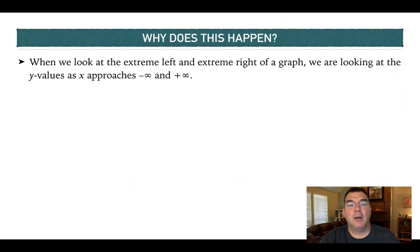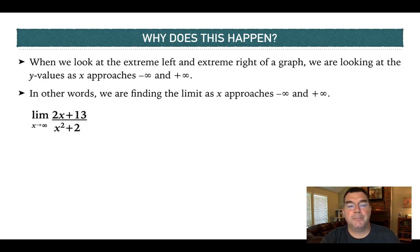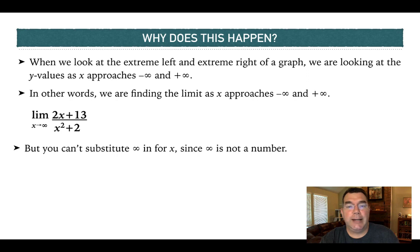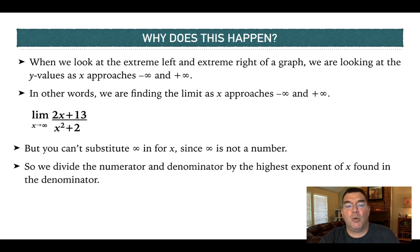So why does this happen? Those three examples illustrate each of the three things that can happen when finding a limit as x approaches infinity. I can't substitute x equals infinity because infinity is not a number — it's the concept of being really, really large positively or negatively. What I need to do is divide the numerator and denominator by the highest exponent of x found in the denominator.